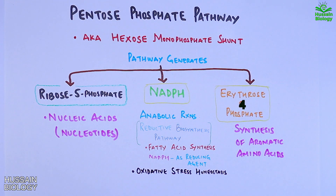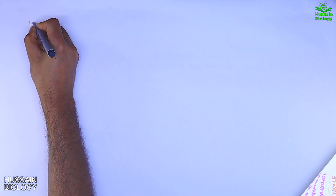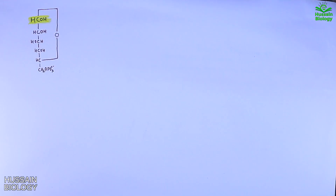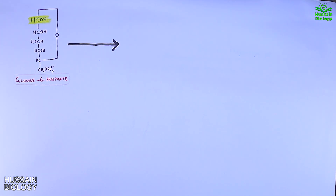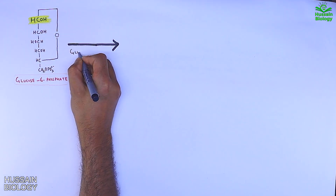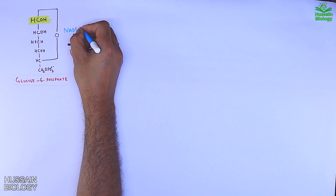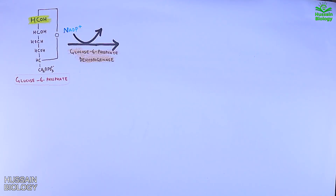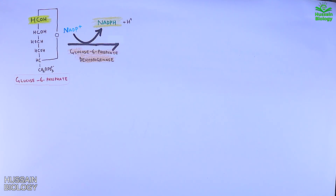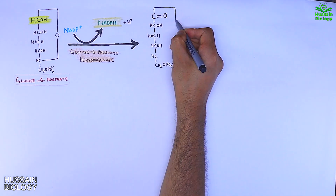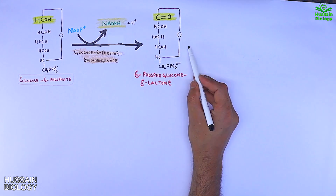Now let's see the pathway in detail. It starts with the glucose-6-phosphate molecule. First, glucose-6-phosphate is acted upon by glucose-6-phosphate dehydrogenase. In this reaction, NADP+ acts as an electron acceptor and gets reduced to NADPH, and overall we get the 6-phosphogluconolactone.